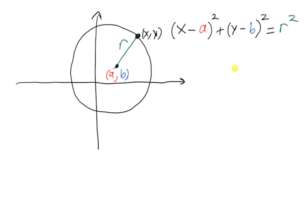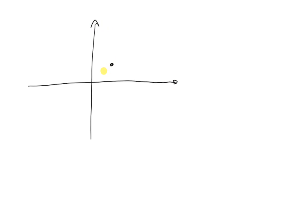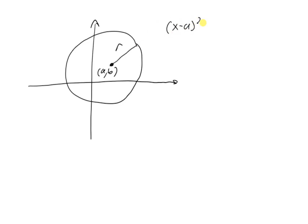You might be wondering where this equation comes from. The answer is that it actually comes from the Pythagorean theorem. It's not required that you know this for the SAT, but it's quite nice and will probably help you memorize this equation, so I'll go over it briefly. Suppose I have a circle in the xy-plane centered at (a, b) with radius r. We know the equation should be (x minus a) squared plus (y minus b) squared equals r squared — but why is that true?